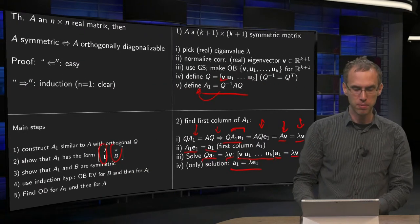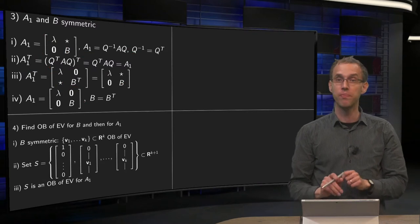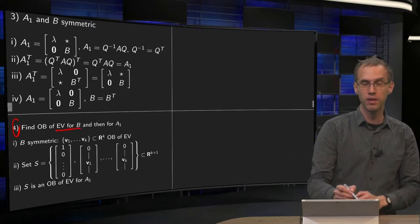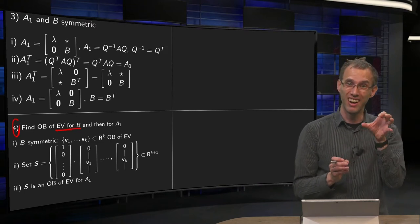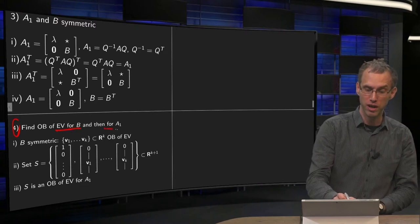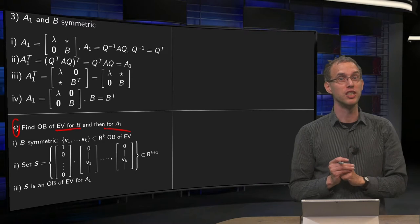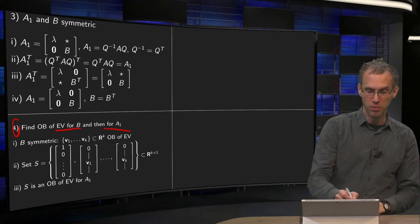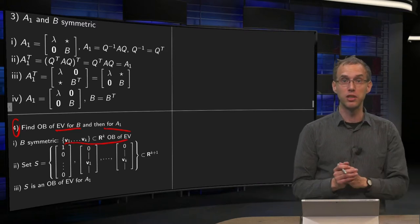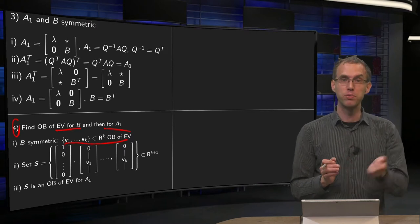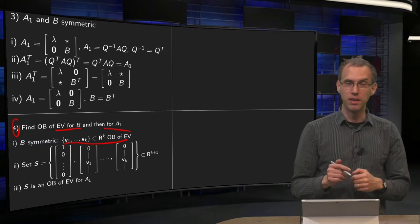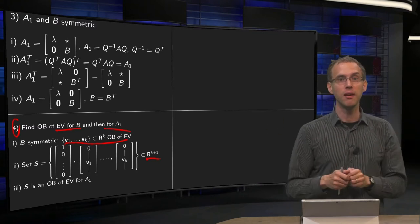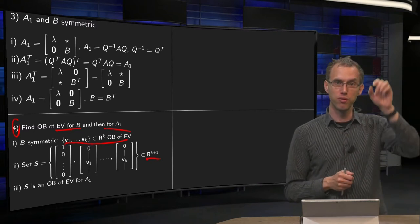Step 4: we use the induction hypothesis. Since B is symmetric and of size k×k, by the induction hypothesis we have an orthonormal basis of eigenvectors v1, …, vK for B in Rᵏ. We then find an orthonormal set S in Rᵏ⁺¹ using a small trick: we prepend a 0 to each of v1, …, vK as their first component, giving vectors (0, v1), (0, v2), …, (0, vK) in Rᵏ⁺¹.